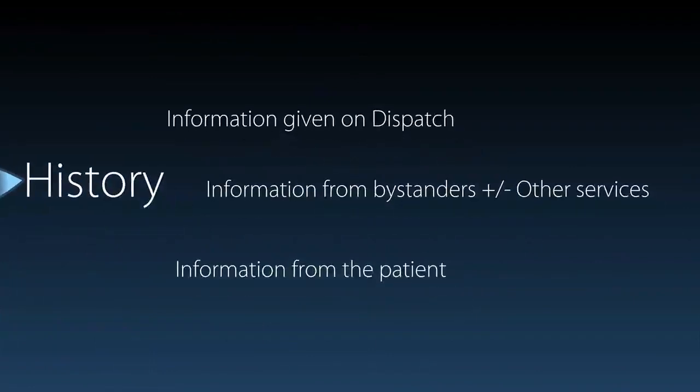You then take a history. In pre-hospital care, you have three avenues of history information: the information given on dispatch by the ambulance service, information from bystanders and other services on scene, and information from the patient and their family.